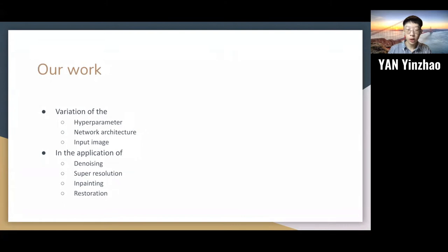For our work, we have changed the hyperparameters and the network architectures of the original code. We would like to find the optimized value, because the author mentioned that their values are far from optimal. We have also changed different types of images to better examine the performance of the Deep Image Prior. We have applied different variations in the application of image denoising, super-resolution, inpainting, and restoration.